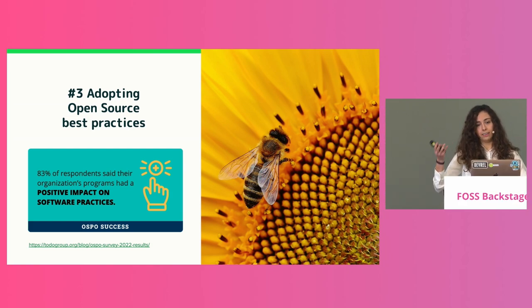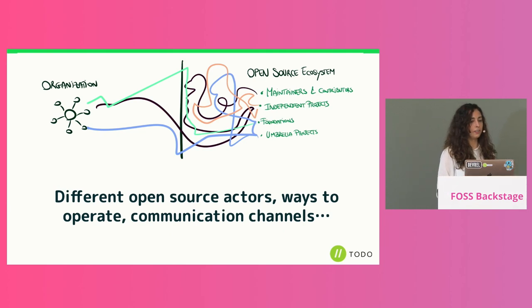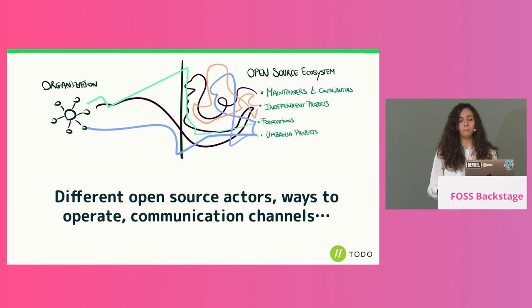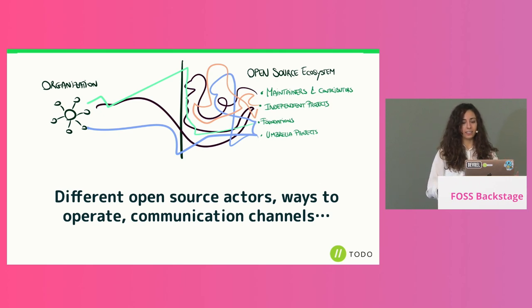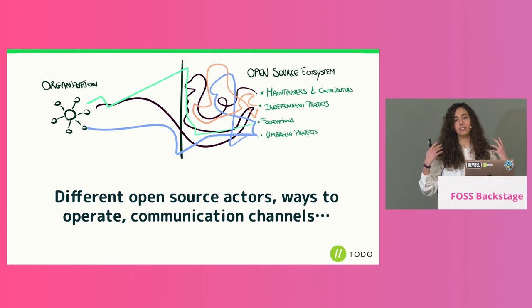In a nutshell, there are different ways organizations can support open source sustainability. But there is also a complex ecosystem — it's not just a straight line. There are maintainers, contributors, independent projects, foundations, and umbrella projects — different open source actors operating through different communication channels. Sometimes the message is not well transmitted, and the organization doesn't even hear the message from many of those open source actors.